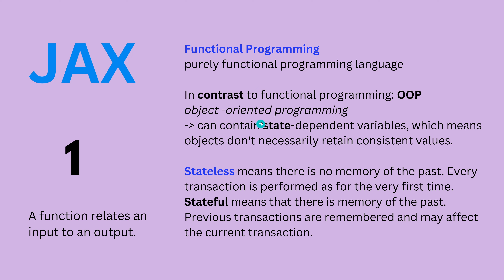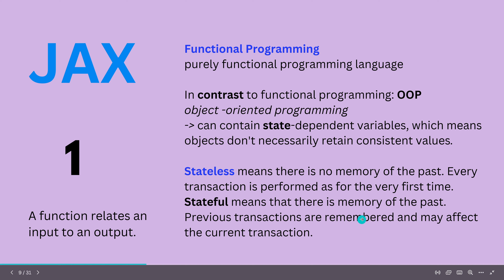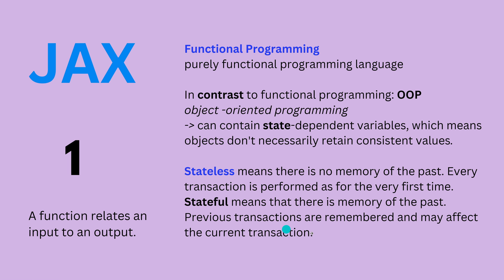Two terms you will encounter: stateless and stateful. Stateless means there's no memory of the past — whatever happened is gone. No recording, no caching, nothing. Every JAX transaction is performed as if for the very first time. Stateful, on the contrary, means there is a memory of the past, and previous transactions may affect the current transaction. This is what you do not want with massive parallelization — if GPU 1 is modifying your parameter Y and GPU 8 is also modifying Y, when you combine them back, you have problems. Therefore, we go with stateless.